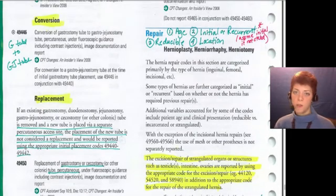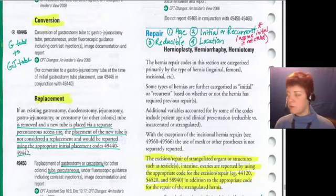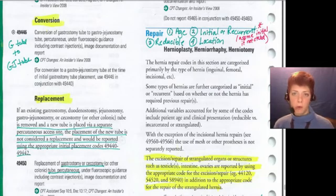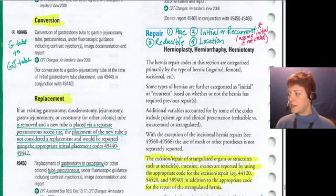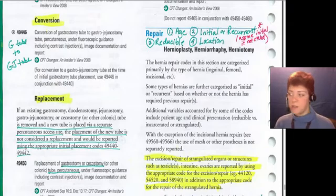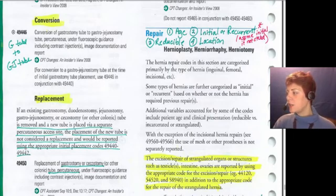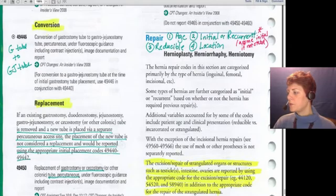The next variable is initial versus recurrent — you want to abstract that from the report. Then: is it reducible or not? And location — where is it? Those are the key variables on the answer sheet: location or type.